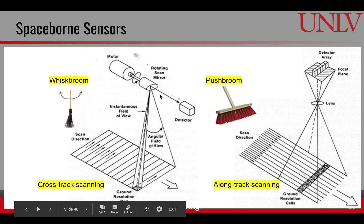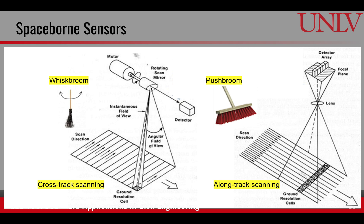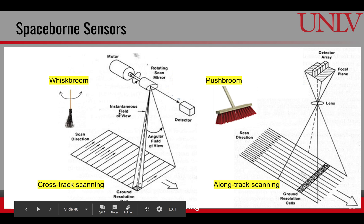In the case of the cross-track scanner, there is only a single detector detecting the pixel or ground information within the instantaneous field of view as it moves across the track. In the case of the along-track scanner, there is an array of detectors that simultaneously cover the whole width of the swath. As the satellite moves along its track, less time is spent because there is no scanning involved — all the scans along the track are done simultaneously.